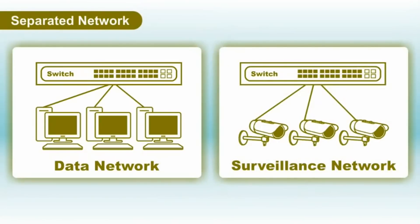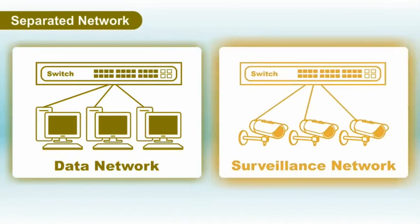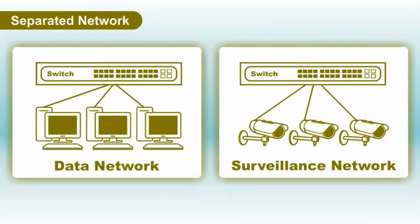When building an IP surveillance system, you can create separate networks for your data and surveillance traffic. However, this requires purchasing additional hardware and installing new cabling, which can be costly.